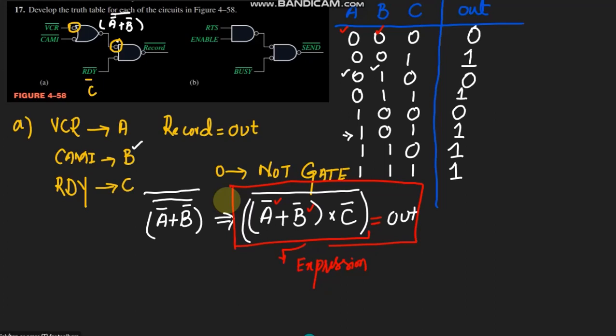This is the truth table which we have developed from this expression, which is the expression for the output where 'out' is 'record'. Here we got our output from this expression — the way to find the output is to first find the Boolean expression for any output variable and then find the output for all possible combinations of the inputs. That is it for today. In our upcoming video I will discuss part b, so till then take care of yourself and I will see you soon.